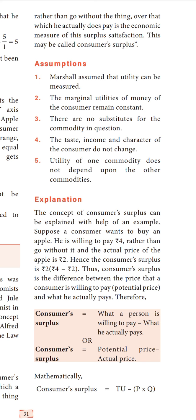Third assumption: there are no substitutes for the commodity in question. For example, if you go to a OnePlus showroom, that showroom has only one product at 25,000. There is only one mobile there, so you have no substitute — you either buy that one mobile or you don't.